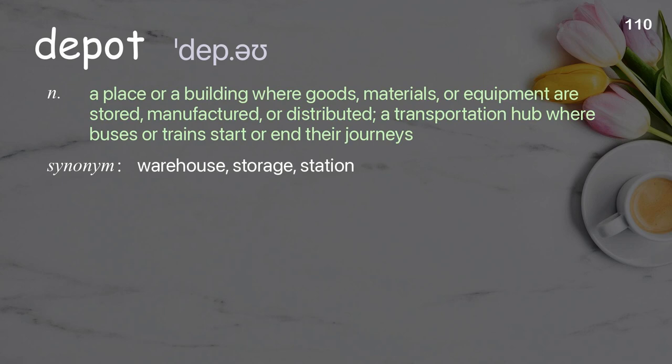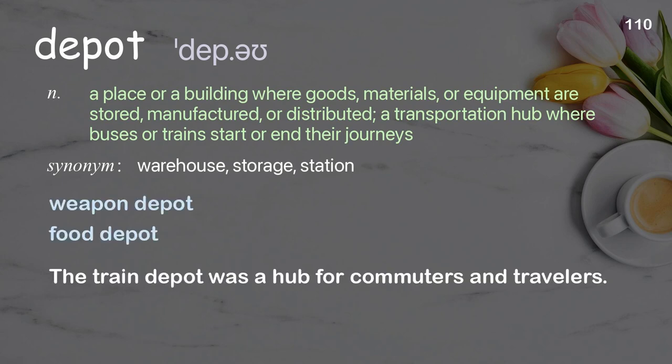Depot: a place or building where goods, materials, or equipment are stored, manufactured, or distributed; a transportation hub where buses or trains start or end their journeys. Examples: weapon depot, food depot. The train depot was a hub for commuters and travelers.